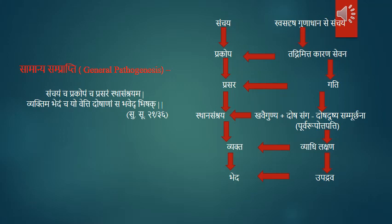After Prasara: Prakupita Doshah Sarire Paridhavata Yatra Sangha Khabai Gunnyat Vyadhi Stathropa Jayate - the dosha moves throughout the body and where it finds a favorable place, it gets localized. It must be remembered that Nidana causes vitiation of three factors: Dosha, Dushya, and Srotas. Nidana causes both Dhatu Abhivridhi Dushya and Srotasam Sapradushta.